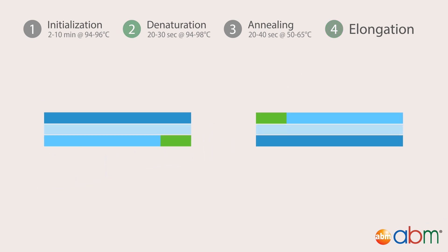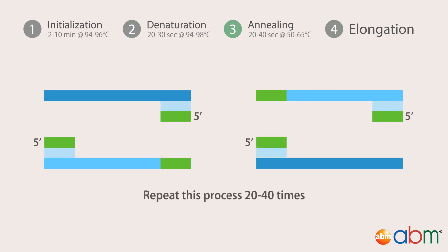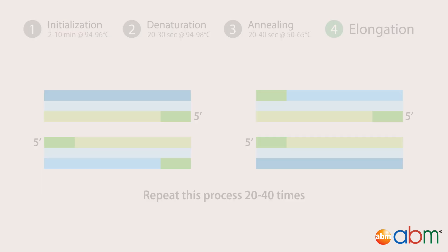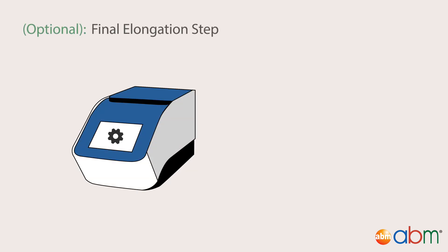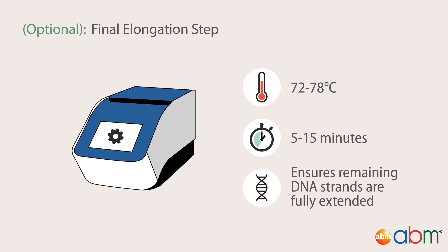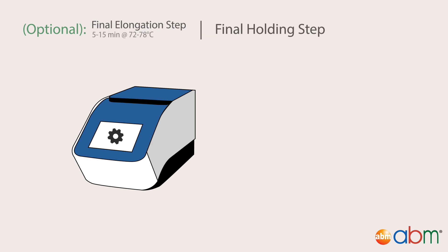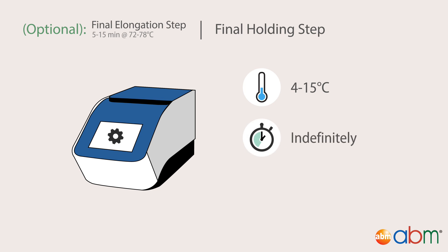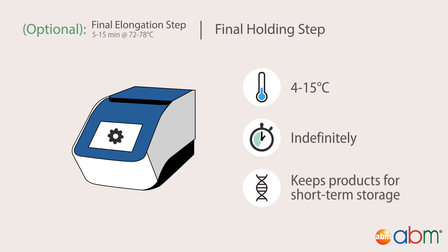The cycle then repeats from denaturation to elongation 20 to 40 times. At the end of the last cycle, there is a final elongation step that keeps the reaction mixture at 72 to 78 degrees Celsius for 5 to 15 minutes. This ensures that any remaining single-stranded DNA is fully extended after the last PCR cycle. A final holding step keeps the PCR at 4 to 15 degrees Celsius for an indefinite time, keeping the products for short-term storage.